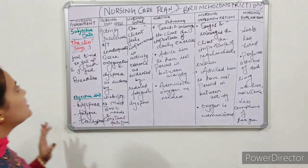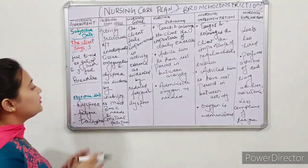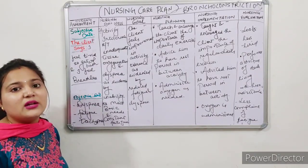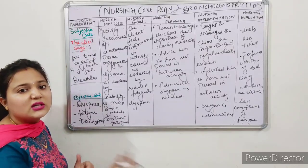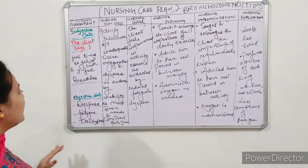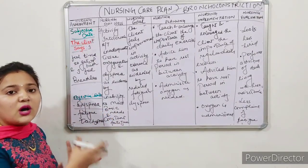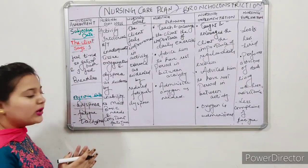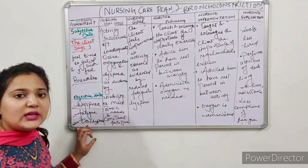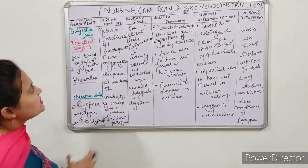Next nursing diagnosis. Subjective data: the client says 'I feel tired and I feel breathless — I have difficulty breathing.' The client says 'I feel tired to get up and walk' — they feel so much tiredness that they cannot even get up easily. When they perform any activity, they feel tired and breathless. Objective data we observe: dyspnea — breathing difficulty, fatigue/tiredness, and tachypnea — meaning the respiratory rate is fast.